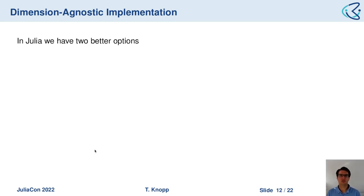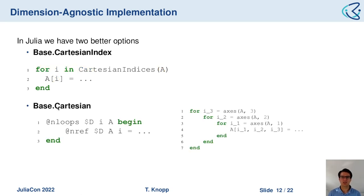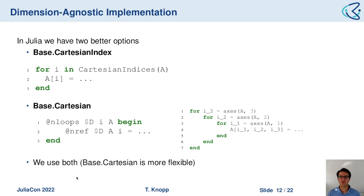In Julia we have better options. The first is Base.Cartesian, which allows looping over an array where the index i is not a scalar but a multi-index. The alternative is the @Base.Cartesian macro, which for d equal to 3 translates macros into nested for loops. In NFFT.jl we use both solutions, but in most cases we use Base.Cartesian because our inner for loop is always a little different from the outer ones, and we wanted to multi-thread only the outer for loop.